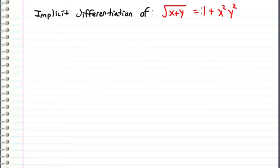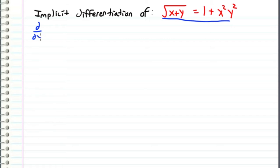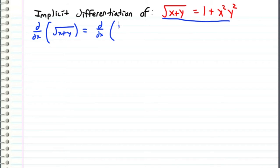Here's a question submitted by a fellow Reddit user, and he wants us to implicitly differentiate this equation and solve for dy/dx. So let's write this out. We've got d/dx of the left-hand side, which is the square root of x plus y, and this is going to equal d/dx of the right-hand side.